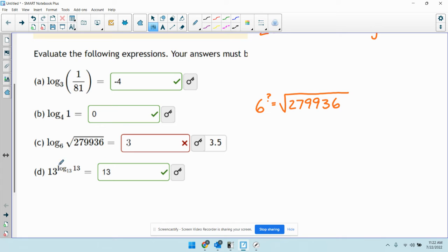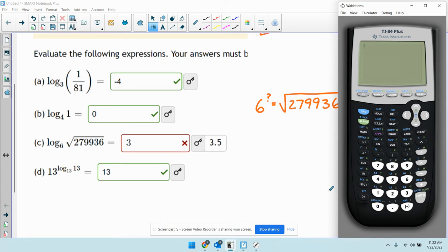You can plug this log into the calculator by either using the log base button. If you have math and hit up, some people might have the log base button. You can do that. Just plug in each number individually. 6 and the square root of 279936, and you get 3.5.